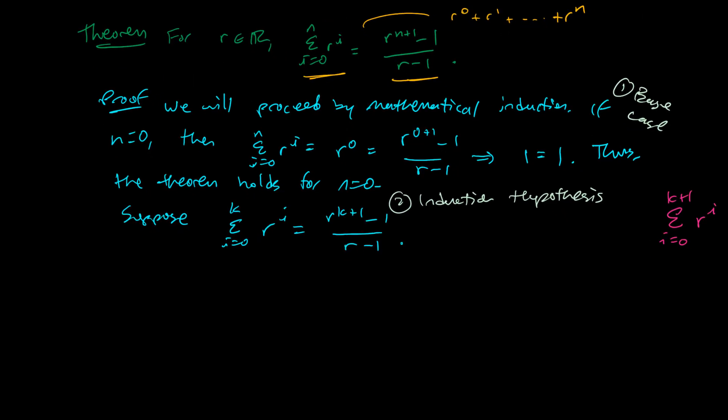Now this is kind of challenging our knowledge of series notation. Remember, this is r to the 0 plus r to the 1, all the way up to r to the k. So how do I get to the k plus 1th instance? I just take that same expression, and now I add r to the k plus 1th power. And I can do that on the same side here, r to the k plus 1 minus 1 over r minus 1. And to keep the equation true, I'm just going to add r to the k plus 1 power on that side as well.